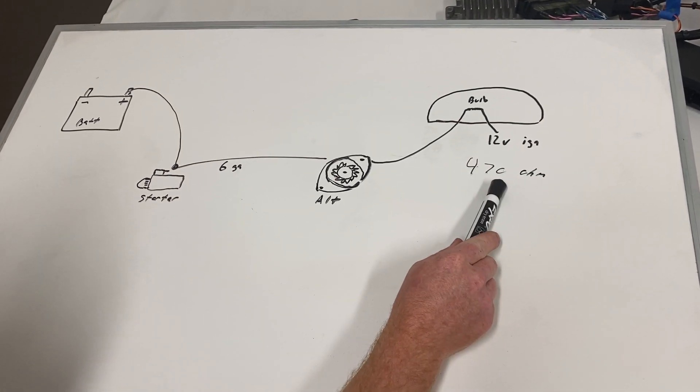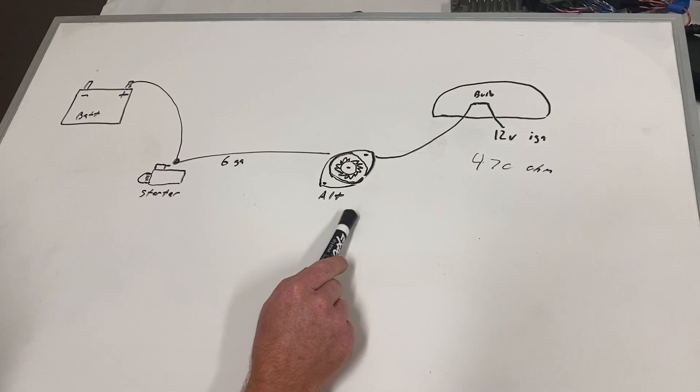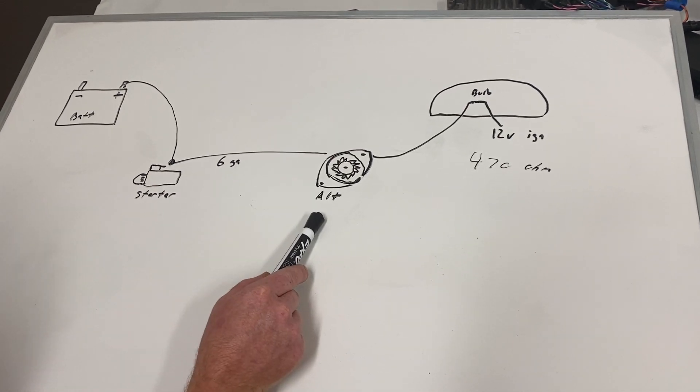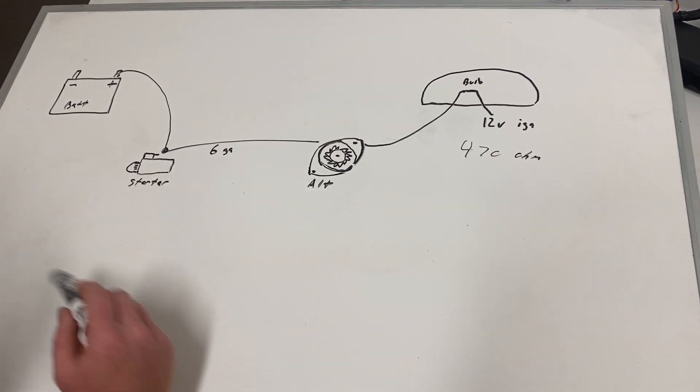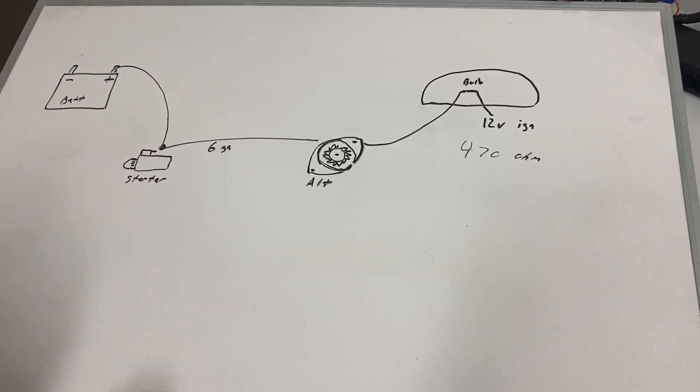So this is mainly Nissan stuff here, but this is the way all of our harnesses are set up. Hooking the starter up to the alternator and the starter up to the battery. So hopefully that helps you guys out.